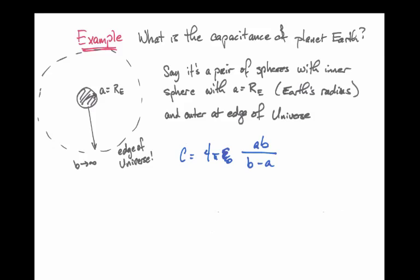Recalling that formula, it's 4π epsilon naught times this ratio AB over B minus A. If B is infinitely large, then the minus A in the denominator can be neglected. And I have, as a result, 4π epsilon naught times A times infinity over infinity minus A, which approximately reduces to 4π epsilon naught times A.